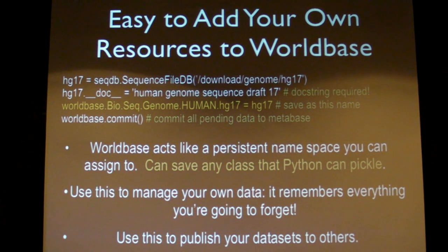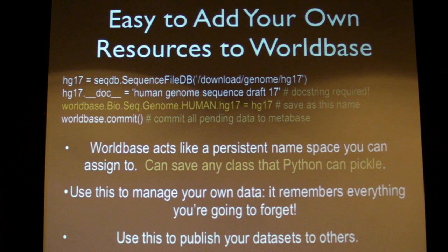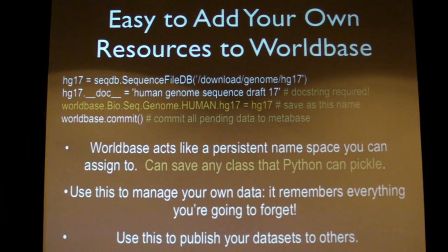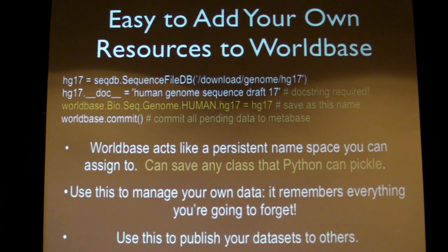How do you actually put data into WorldBase yourself? It's a namespace, so you just assign into the namespace — that's it. Here I'm creating a resource, say draft 17 of the human genome. I give it a docstring so that when people search WorldBase they'll have something to tell them what it is. Then we just assign into the namespace and commit. WorldBase will detect any dependencies; if this piece of data has dependencies on other pieces of data, they will also be saved. If those pieces of data are themselves identified as particular identifiers within WorldBase, they'll be saved as a reference to that name.